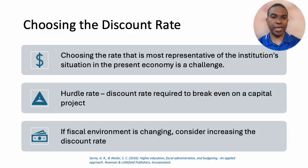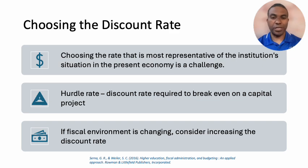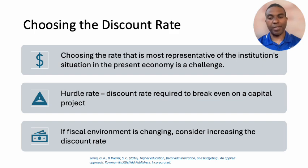In terms of choosing the discount rate, you need to figure out what's most representative of your situation at your college and in the present economy — and that's really difficult to do. The chapter introduces the term hurdle rate, which is the discount rate that allows you to break even on your capital project. If the fiscal environment is changing, you may have to be conservative and increase that discount rate to account for volatile market conditions.